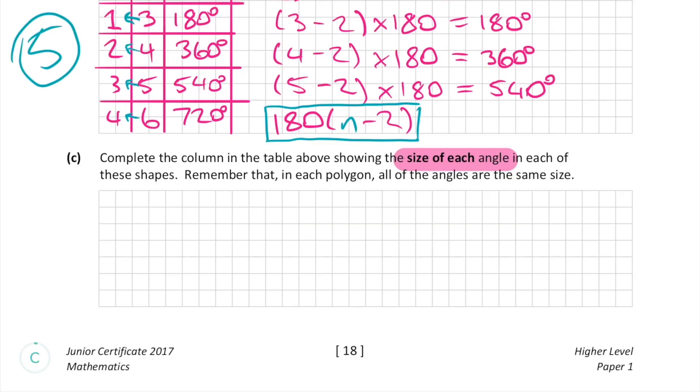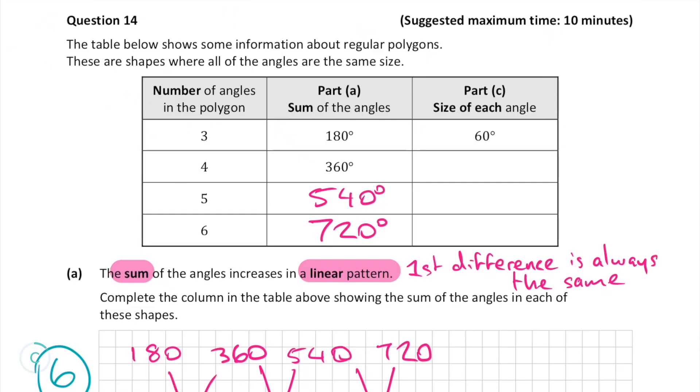Moving on to part c we have to complete the column in the table showing the size of each angle. To do this we can use what we already have filled into the table to help us.